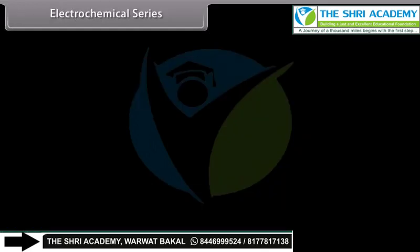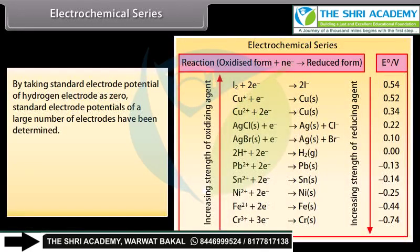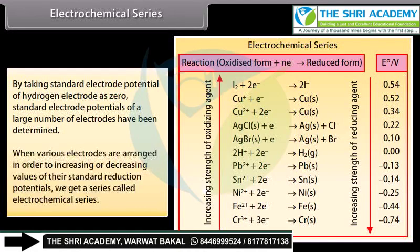Electrochemical Series: By taking the standard electrode potential of the hydrogen electrode as zero, the standard electrode potentials of a large number of electrodes have been determined. When various electrodes are arranged in order of increasing or decreasing values of their standard reduction potentials, we get a series called the electrochemical series.